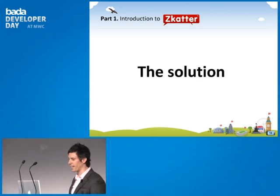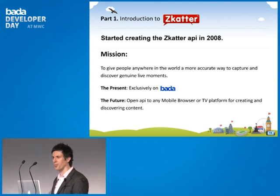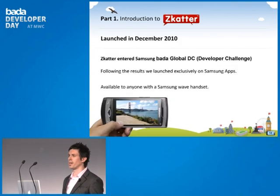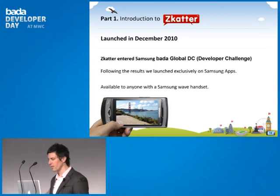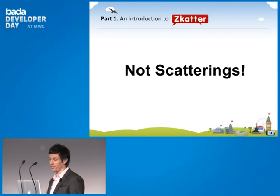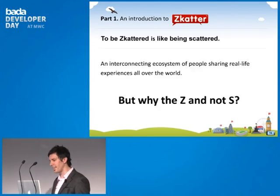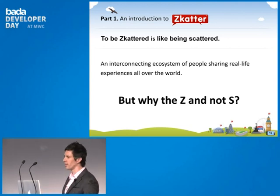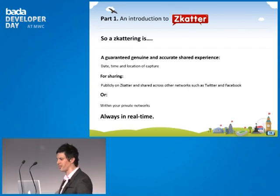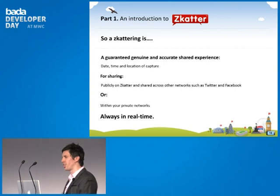In 2008, we started building the Scatter API. We have one mission: to give people anywhere in the world a more accurate way to capture and discover genuine life moments. At the moment, we're on Bada, and in the future we're opening our API up to any mobile browser or TV platform. We launched in December after entering the developer challenge, and we're now available to anybody with a Samsung Wave handset. The live moments that we capture we call scatterings — with a Z, not an S — because a scattering is an interconnected ecosystem of people sharing real-life experiences all over the world. Why the Z? Generation Z. In Wikipedia, it says anybody from Generation Z between 0 and 30 years of age have never known a world without the internet or a mobile device.